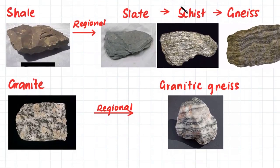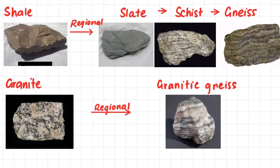If we apply regional metamorphism — heat and pressure — to shale, we will end up with slate. If we then continue to apply more heat and pressure to slate, we will end up with schist. If we continue to apply even more heat and pressure, we will end up with gneiss. If we apply regional metamorphism to granite, we will end up with granitic gneiss.